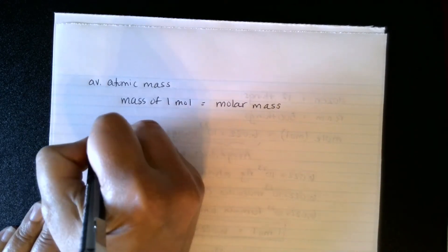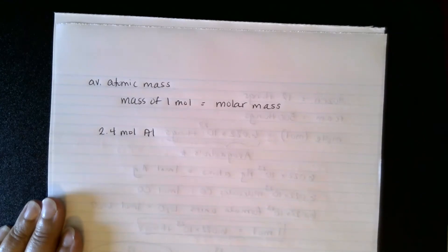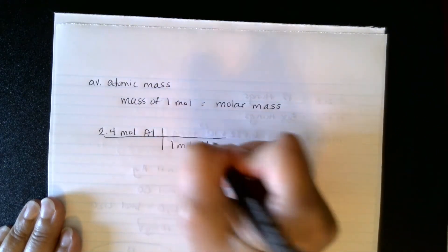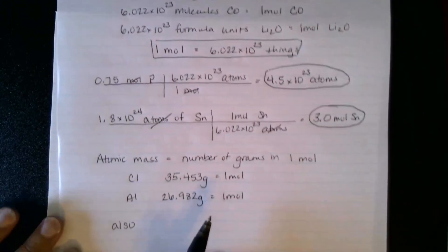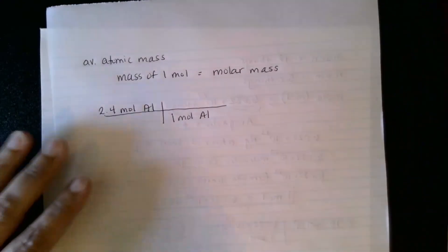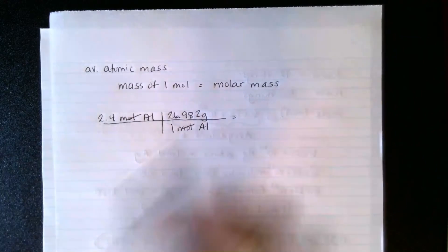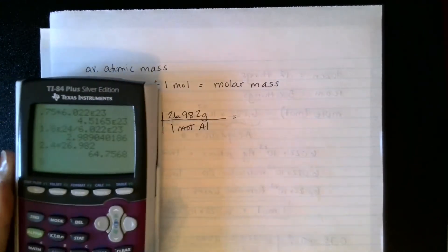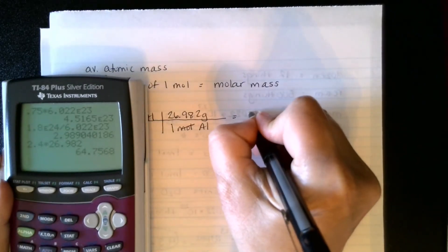Let's say we have 2.4 moles of aluminum and we want to know how many grams that is. In one mole of aluminum, the number of grams is the molar mass, which we already looked up: 26.982 grams per mole. So I take 2.4 times 26.982 and get 64.75. Since 2.4 has two significant figures, the answer rounds to 65 grams of aluminum.